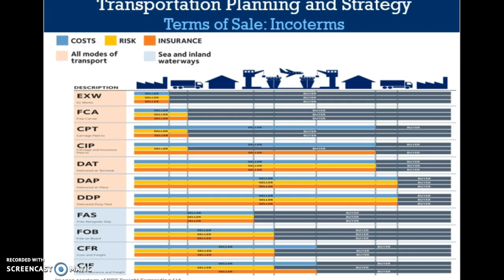Free-on-board terms are used for domestic transactions, while international commercial terms, or Incoterms, are used for international transactions. Incoterms facilitate efficient freight flows between countries. As described by the International Chamber of Commerce, Incoterms are international rules accepted by governments, legal authorities, and practitioners worldwide for the interpretation of the most commonly used terms in international trade. They address matters relating to the rights and obligations of the parties to the contract of sale with respect to the delivery of the goods sold.